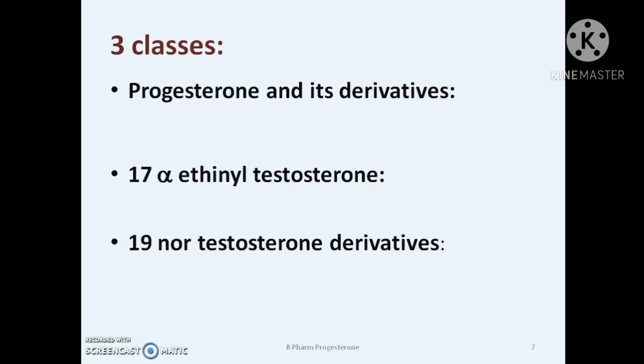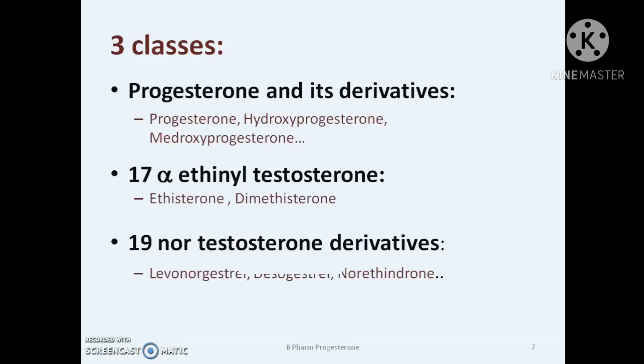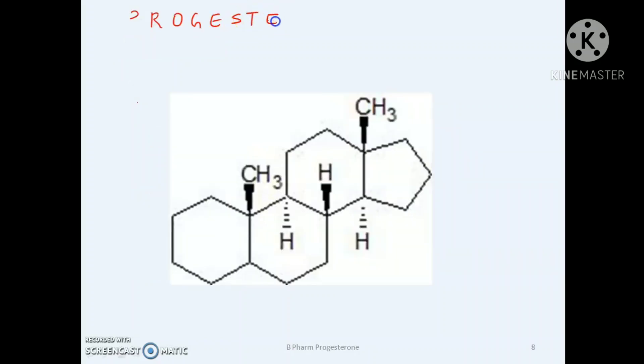Examples of progesterone derivatives are progesterone, hydroxyprogesterone, medroxyprogesterone, etc. Then 17-alpha ethinyl testosterone, the most important one is ethyndron or ethisterone, dimethisterone, etc. The 19-nor testosterone derivatives include norethindron, levonorgestrel, desogestrel, etc.